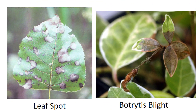Leaf spot is a common descriptive term applied to a number of diseases affecting the foliage of ornamentals and shade trees. The majority of leaf spots are caused by fungi, but some are caused by bacteria. Gray mold, or Botrytis blight, is a fungus capable of living on both dead and live plant material. It often occurs on more tender plant tissues, including flowers, buds, and leaves, with weakened and damaged tissue being the more susceptible.